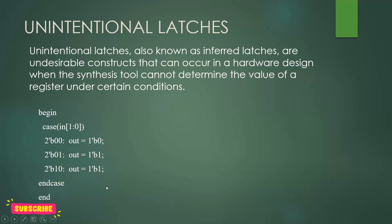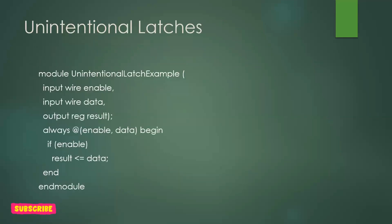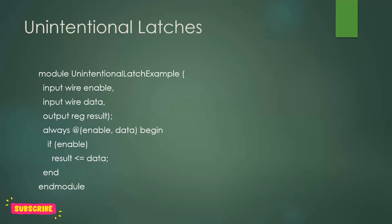When using a case statement, make sure it does not create any unintentional latch. If you are using an if statement, there are also chances of generating unintentional latches. For example: always @(enable, data) — if enable is asserted, data is assigned to result. But when enable is false, the value of result is not defined, so again a latch may be created. The fix is to always include an else clause: if the condition is true, this happens; otherwise, provide another assignment.